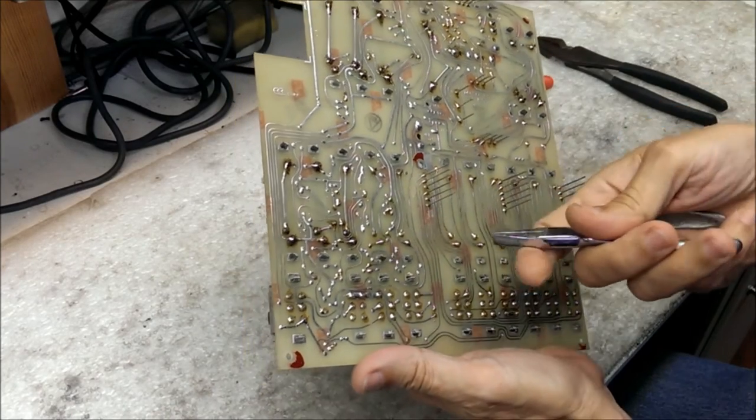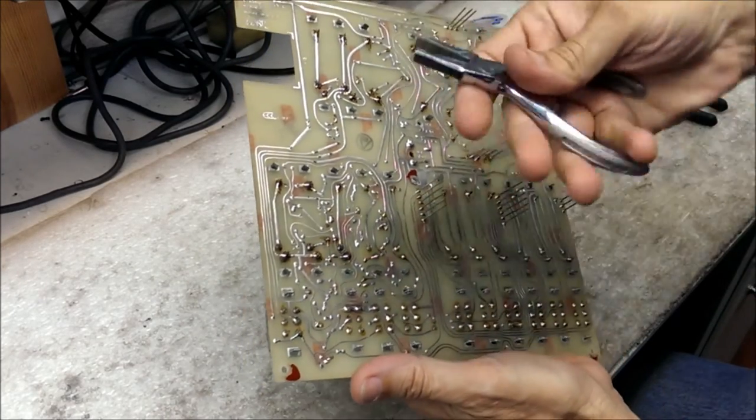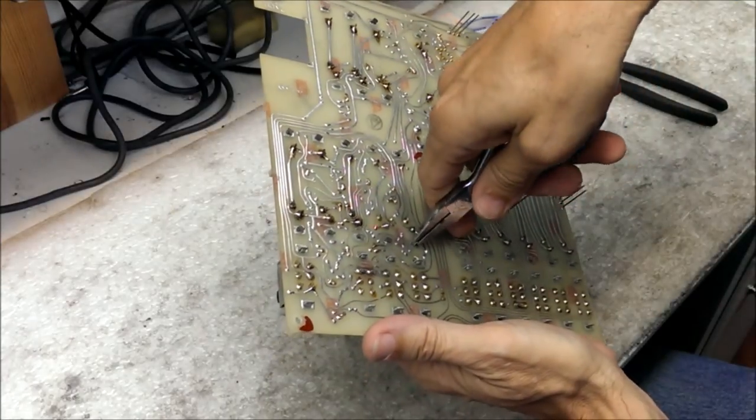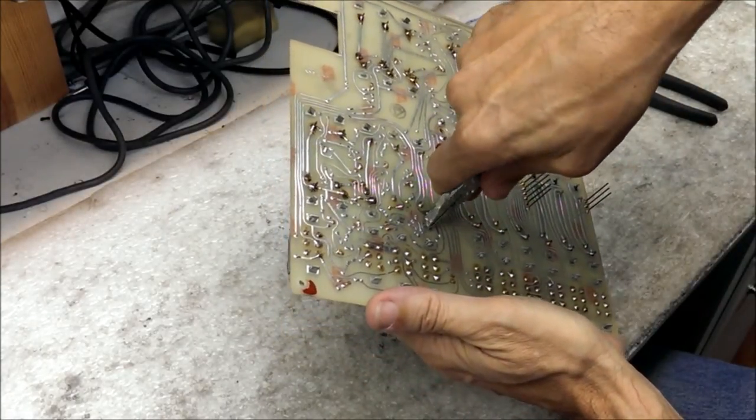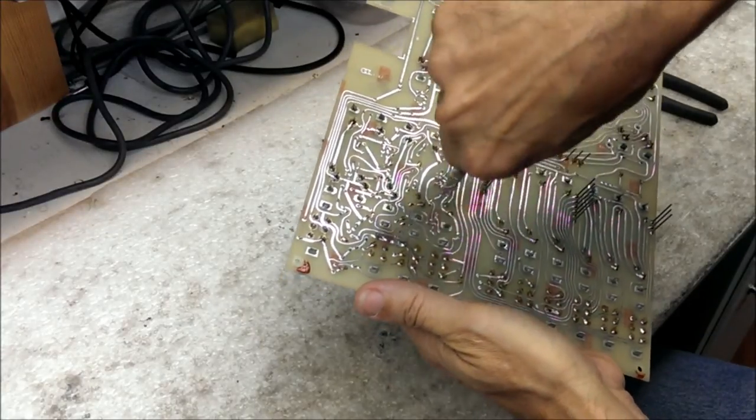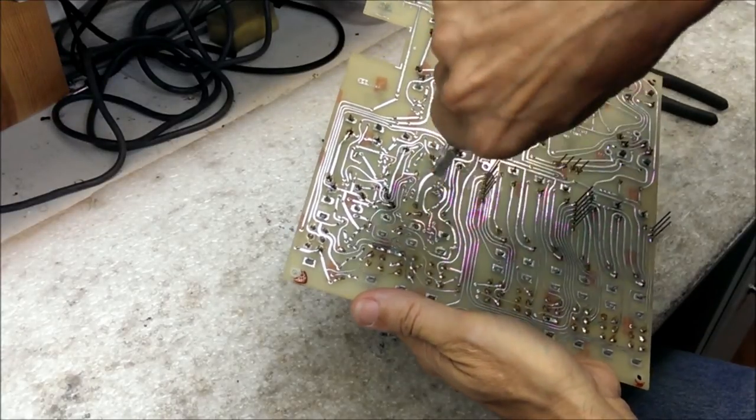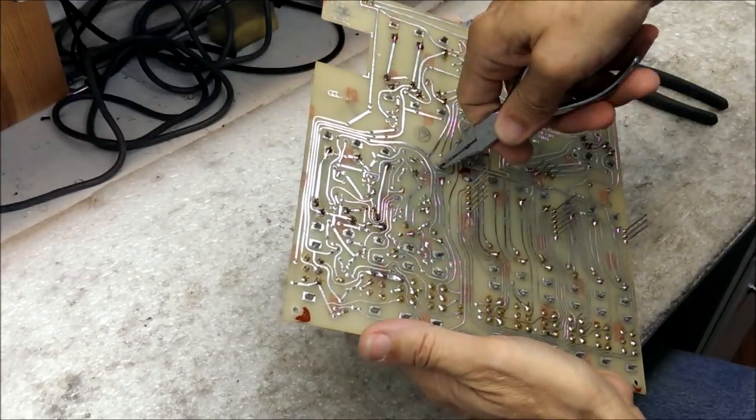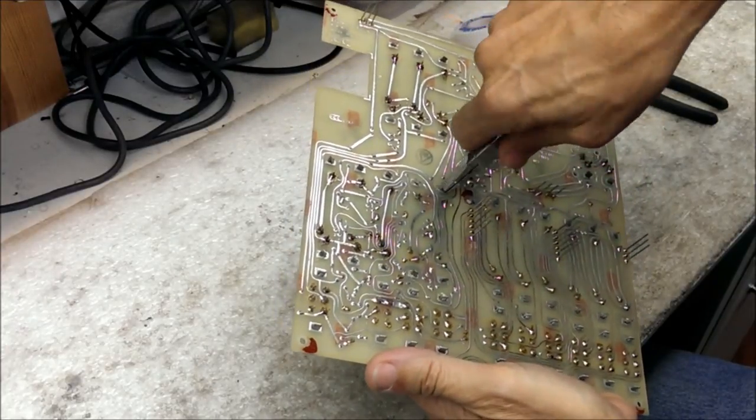So the first step is going to be to untwist that. So we'll use some flat pliers, and just grab the tab, and twist it around carefully until it's straight with the hole, and we'll do that on the other side as well.